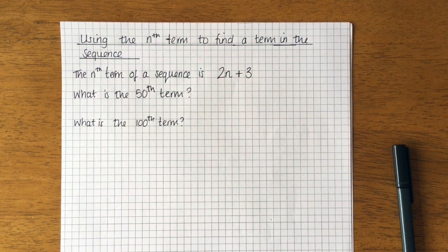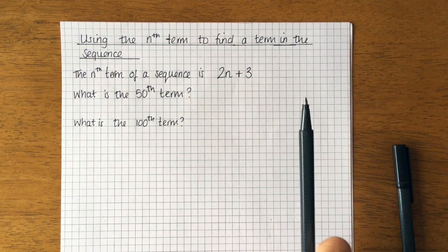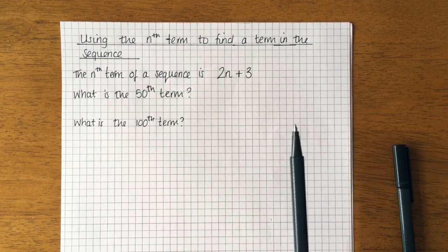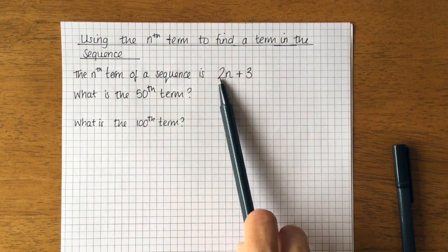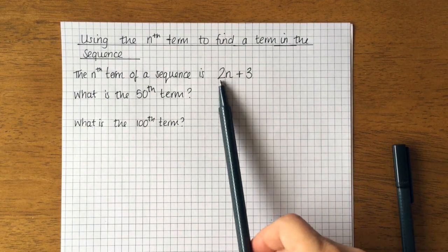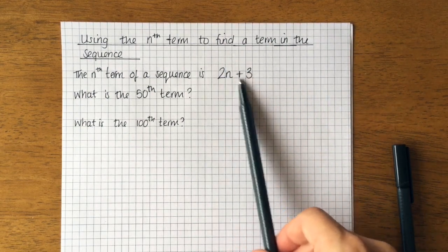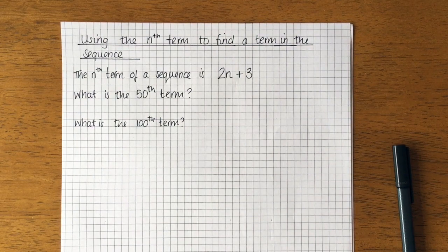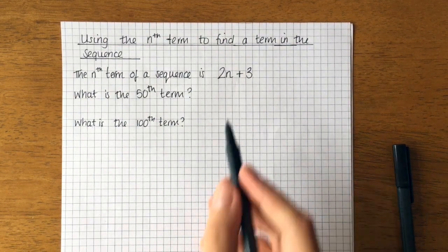So I know that this is telling me that the pattern is going up in twos, but it's not the two times table. Each number in the two times table has had three added to it. So I could write a little bit of the sequence to help me out first of all.